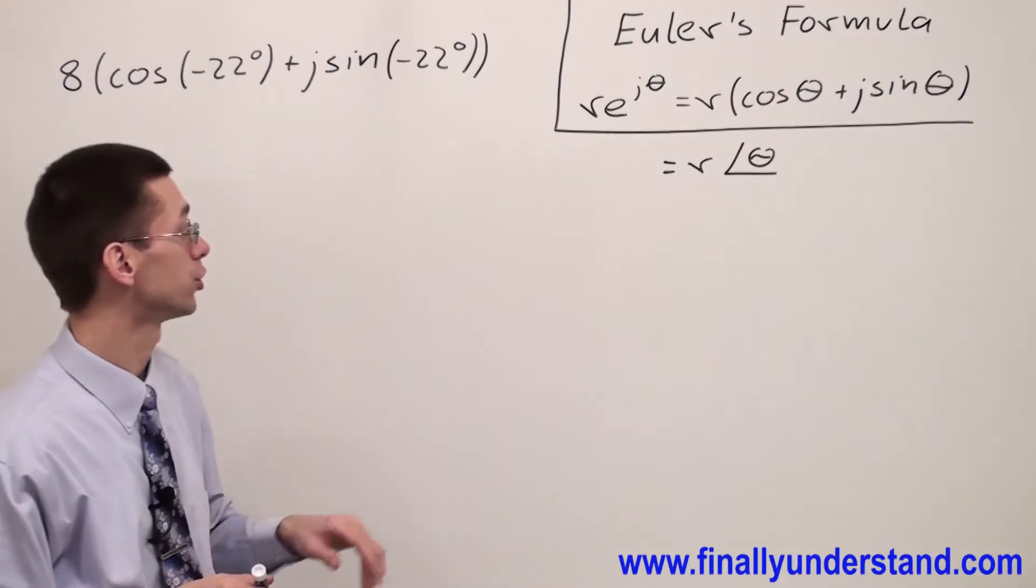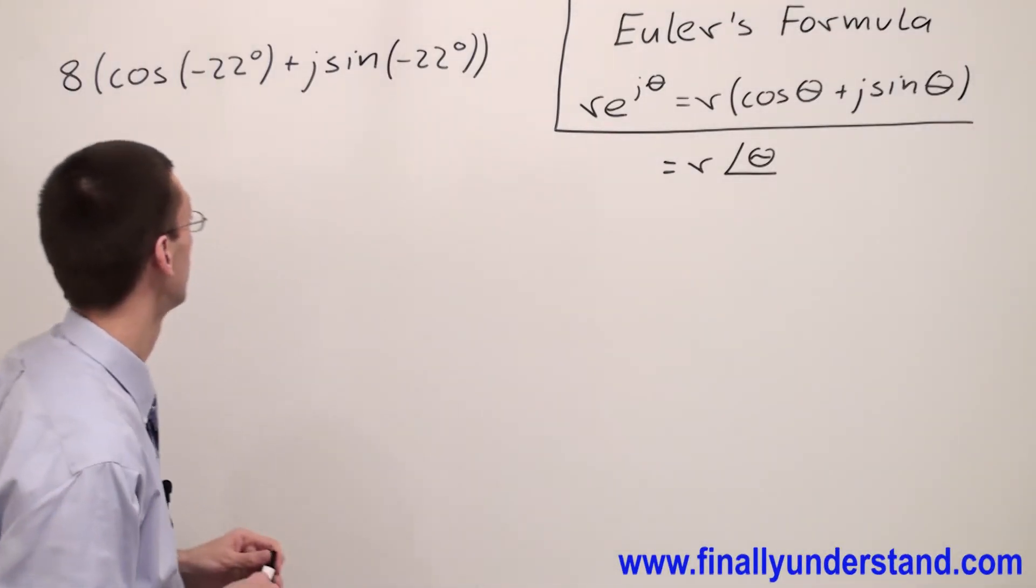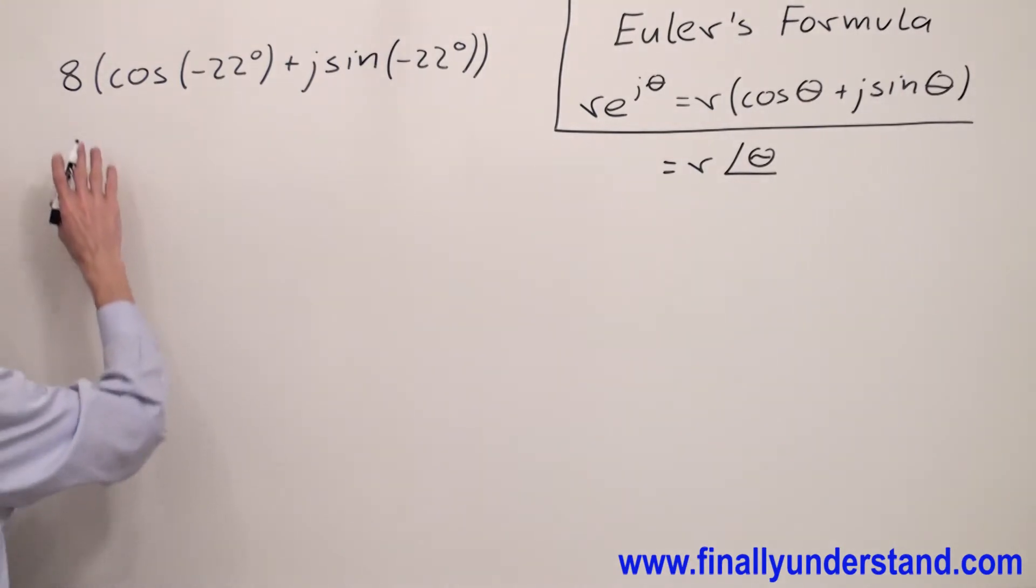Let's take a look at this example again. We have trigonometric form and we're supposed to convert this to the exponential form. What we're supposed to do first, in order to make the long story short, I'm going to convert trigonometric form to polar form first. This is 8 at an angle of negative 22 degrees.